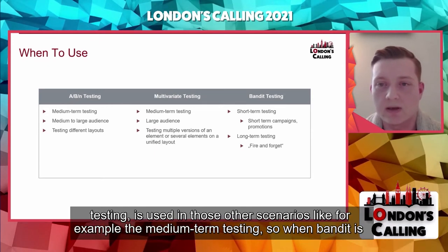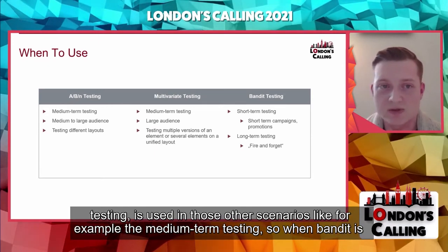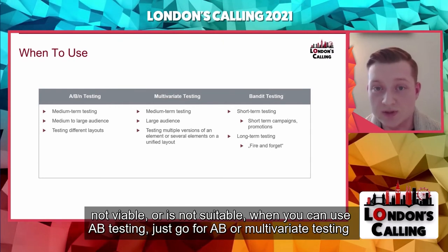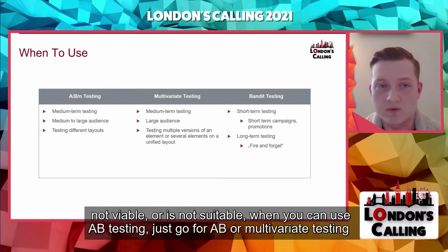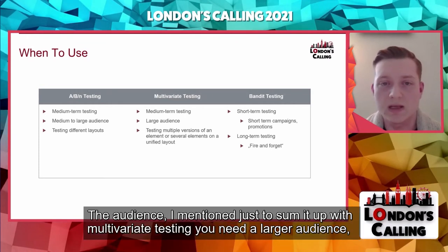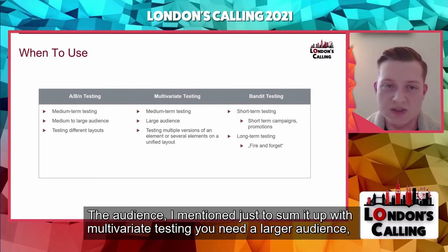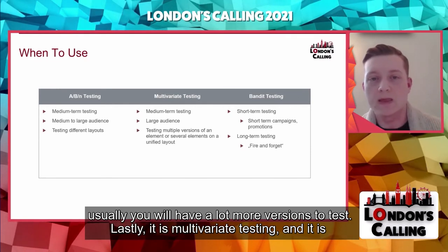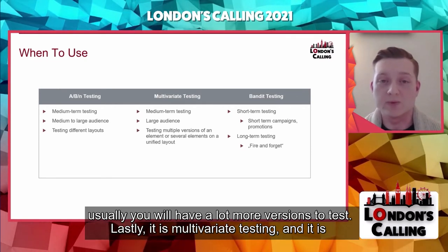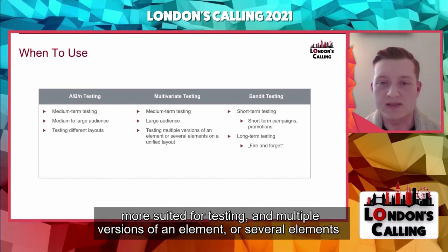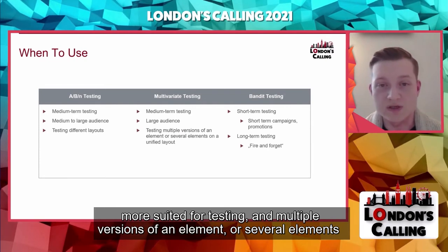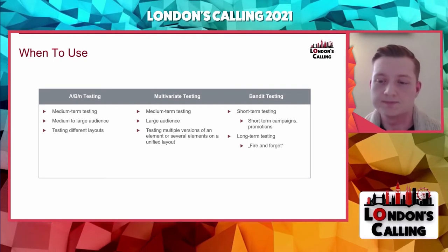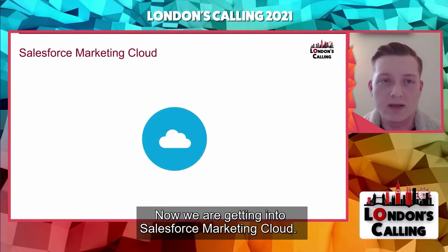A/B/N and multivariate testing are used in other scenarios — for example medium-term testing when bandit isn't suitable. Regarding audience size, multivariate testing requires a larger audience because you typically have more versions to test. Multivariate testing is better suited for testing multiple variations of elements on a unified layout, whereas A/B testing is better for testing completely different layouts.